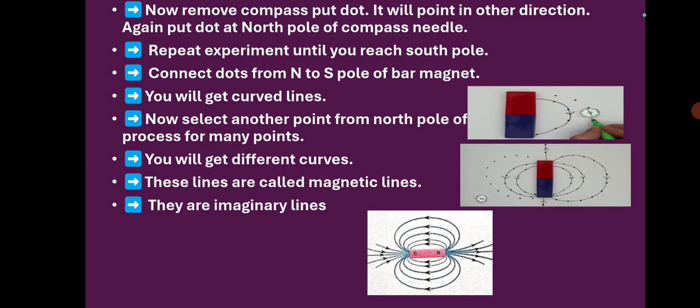Now connect all the dots from north to south pole of the bar magnet. You will get curved lines. After drawing that curved line, again select another point as shown in figure 1 and start from north to south again. Join the points and draw another curved line. In such a way, repeat the process as you are seeing in diagram 2 on both sides. At last, you see diagram 3 — in such a way you will get the curved lines.